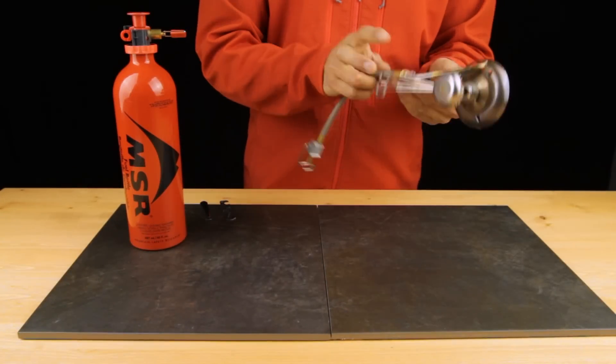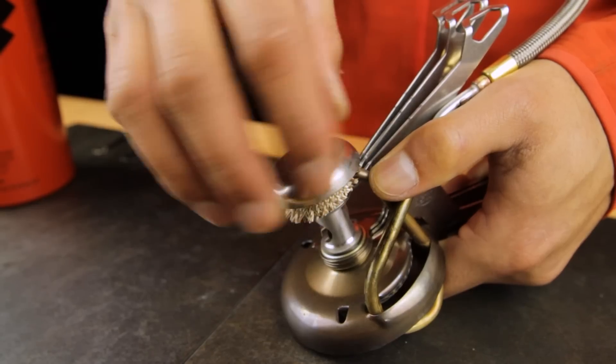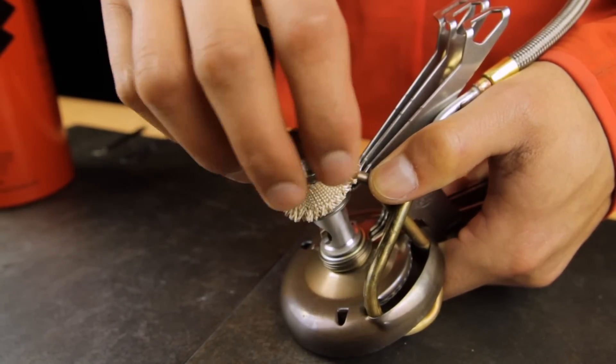To change the jet, first fold the pot support's legs, unscrew the priming cup, and remove the wick.